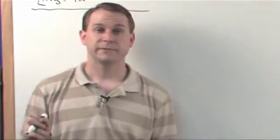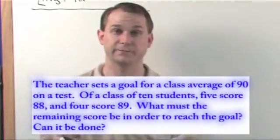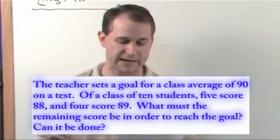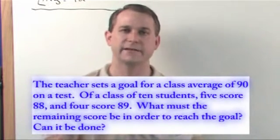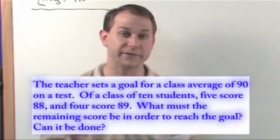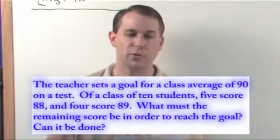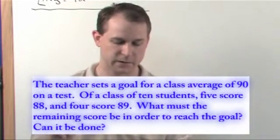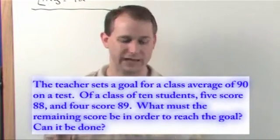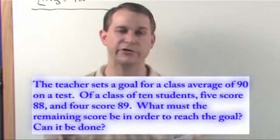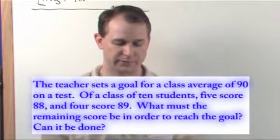Let's go on to something a little bit more challenging. A teacher sets a goal for the class average of 90 on a test. In a class of 10 students, five students score an 88, four students score an 89. What must the remaining score be in order to reach the goal? Can it be done?